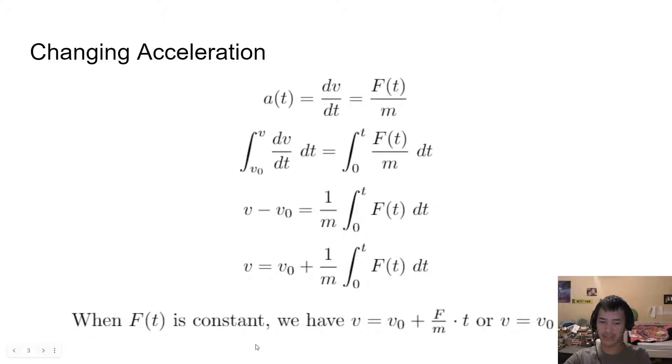Plugging in F of t with just F, where F is now just a number, we have our integral of a constant, which is just F times t. Since it's from 0 to t, we know that it's just F times t minus F times 0, but F times 0 is just 0. So we have V0 plus F over M times t. Remembering that F over M is just A because of Newton's second law of motion, we have V equals V0 plus AT, which is our kinematic equation for when given time and acceleration and velocity.